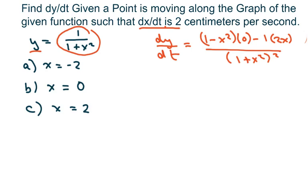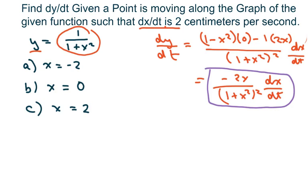So this is all going to be negative 2x over 1 plus x squared squared times derivative of x with respect to t. Now all I have to do is plug everything in.